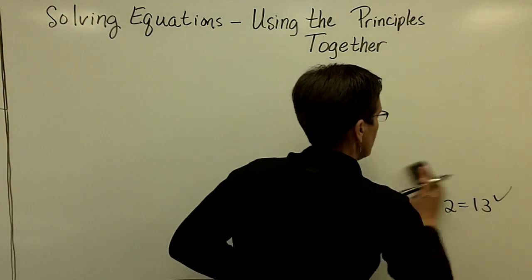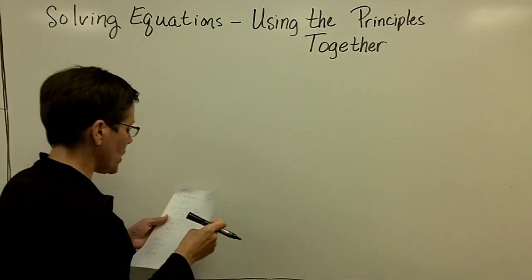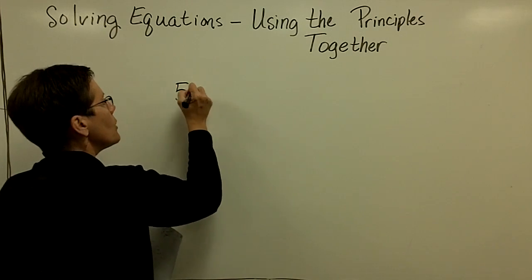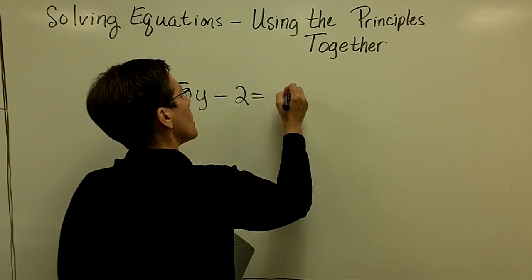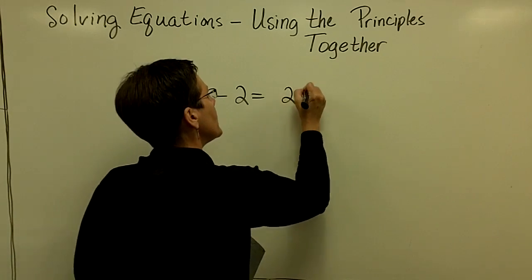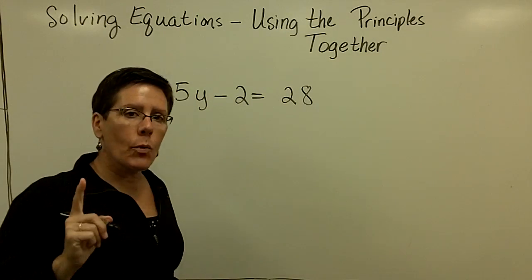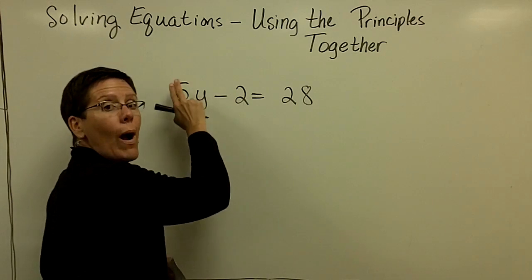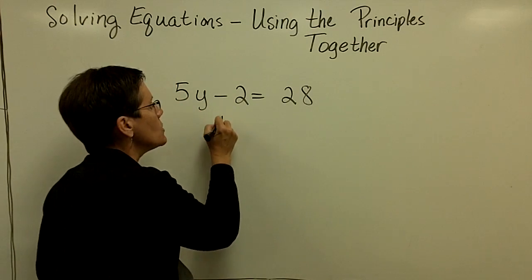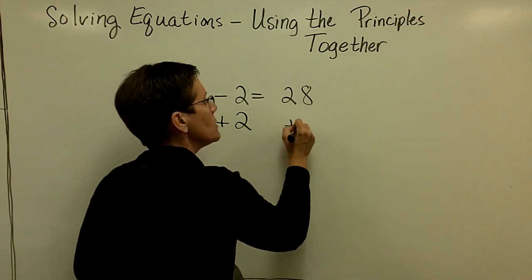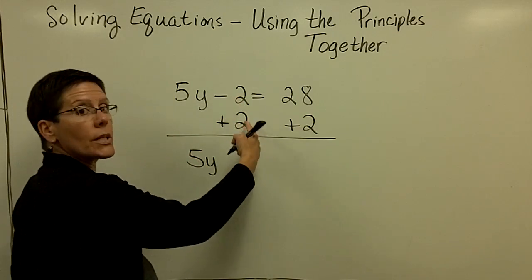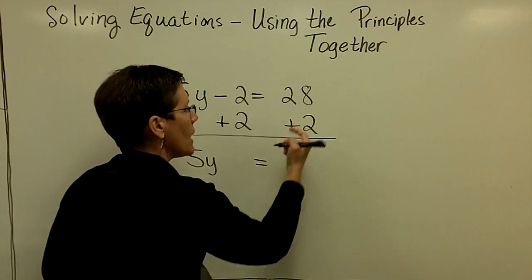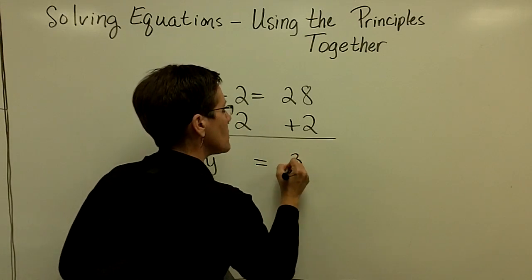Let's look at another one. Very similar. Not going to change my routine quite yet. So if I have 5y minus 2 equals 28, I'm going to try to get the term with y in it all by itself. So I'm going to add 2 to both sides of this equation, and then the 5y will be all alone because they had to be 0, and the right side 28 plus 2 is 30.